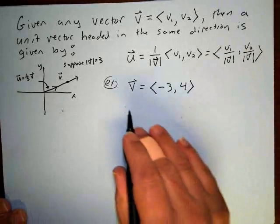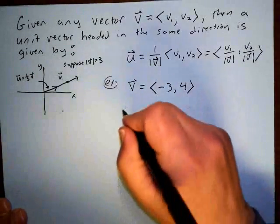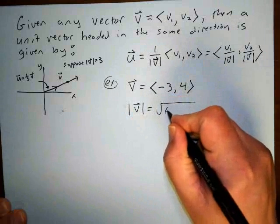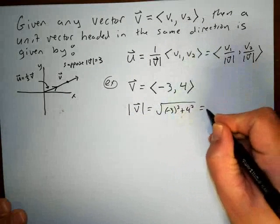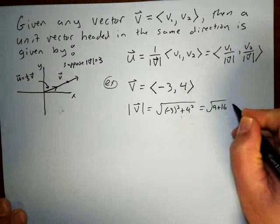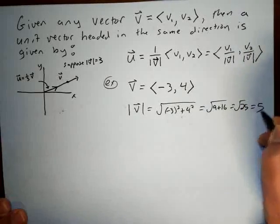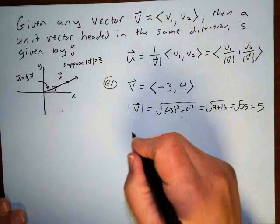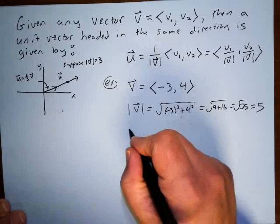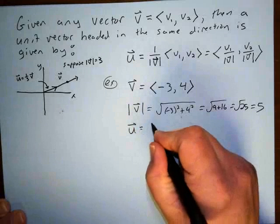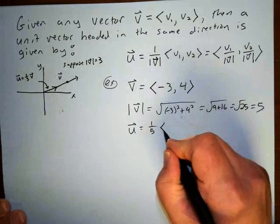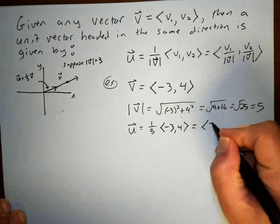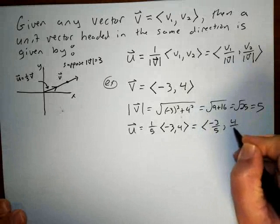Let's do a couple of examples. Take the vector (-3, 4) — it's a special example because the magnitude is the square root of (-3) squared plus 4 squared, which is √(9 + 16) = √25 = 5. This has a magnitude that is not a radical. So the unit vector is (1/5)v = (1/5)(-3, 4), which gives (-3/5, 4/5).